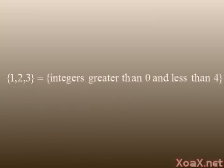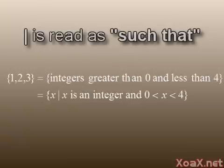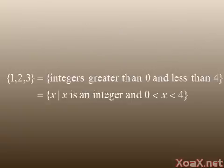Alternatively, we may choose to describe our set as a set of integers greater than 0 and less than 4. More formally, we may use this notation. This is read as the set of all elements x such that x is an integer and x is greater than 0 and less than 4. The vertical bar is read as such that. All three of these descriptions refer to the same set.